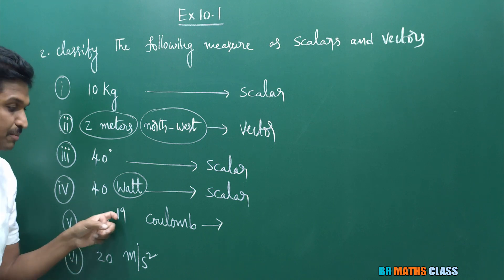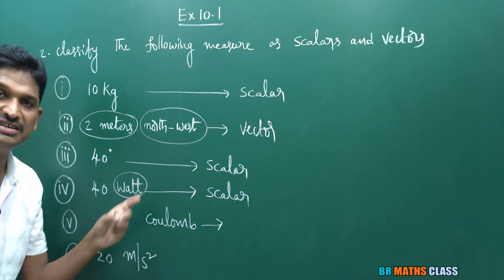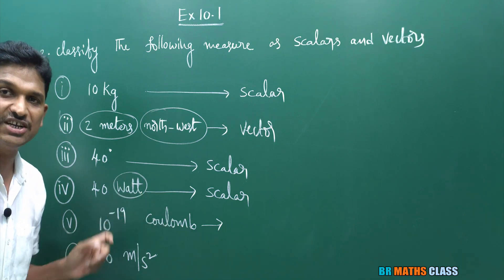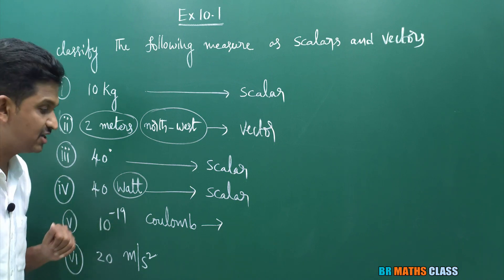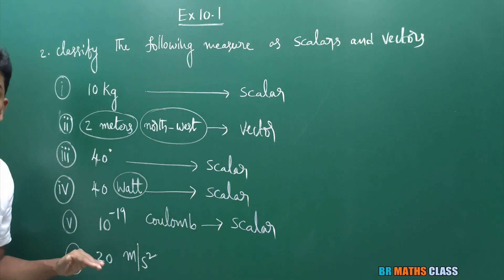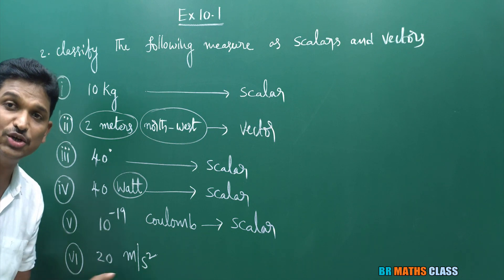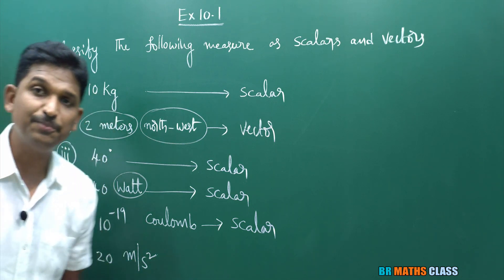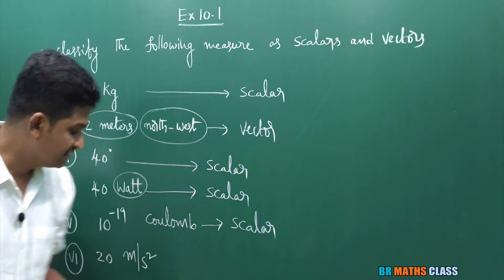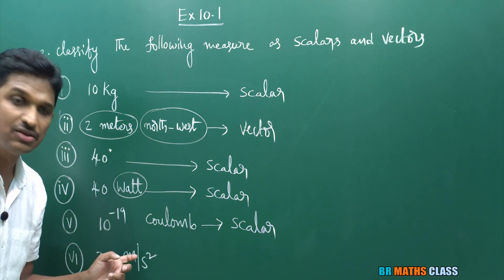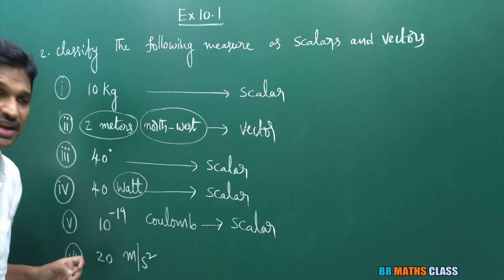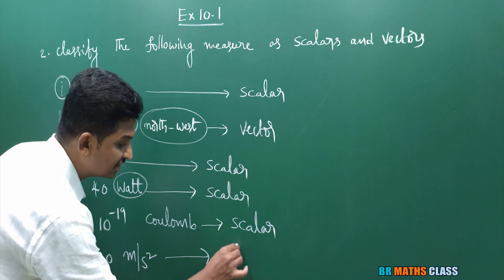10⁻¹⁹ coulombs — coulombs are the units of electric charge, and electric charge is a scalar. There is no direction here, so this is scalar. Now, 20 meter per second square — these are the units of acceleration. We learned in the first class that velocity, force, and acceleration are vectors. So 20 m/s² is a physical quantity having both magnitude and direction, making it a vector.